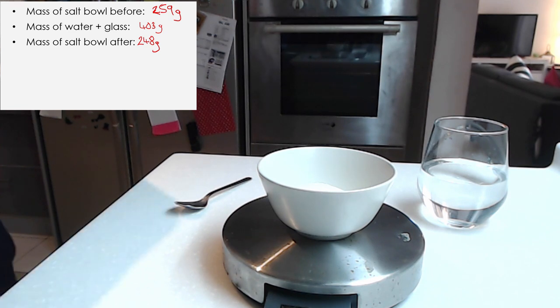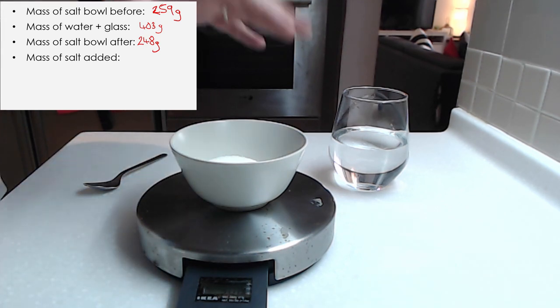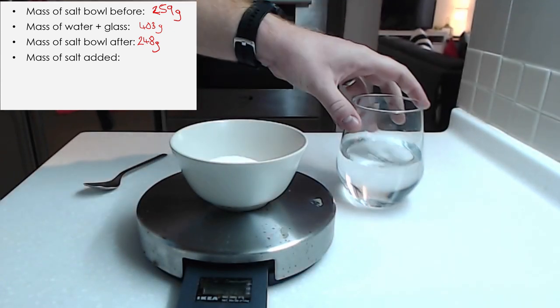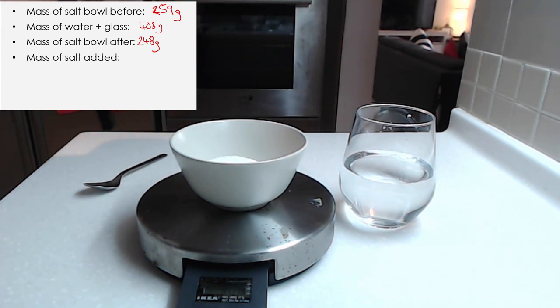So the first question to you is can you work out how much salt have I added to the water? Or if you want to be clever, how much sugar have I added? What's gone from this bowl into the water? What's the mass that I have added to that? I'll give you a second to think about it. And you should work out that that will be 11 grams.